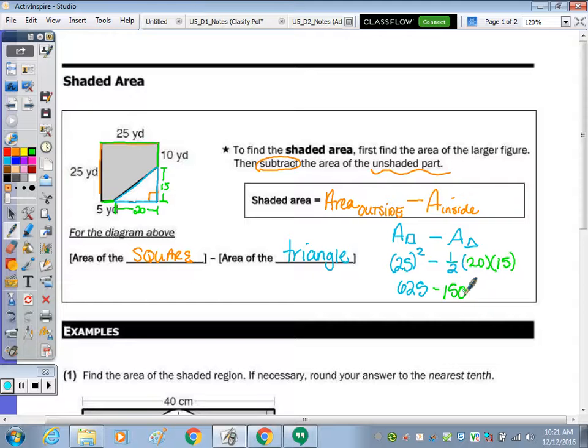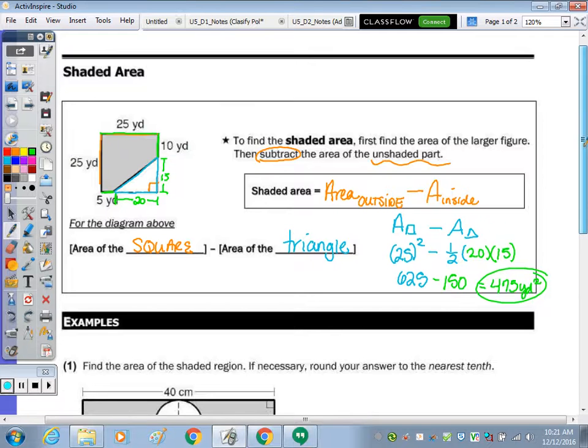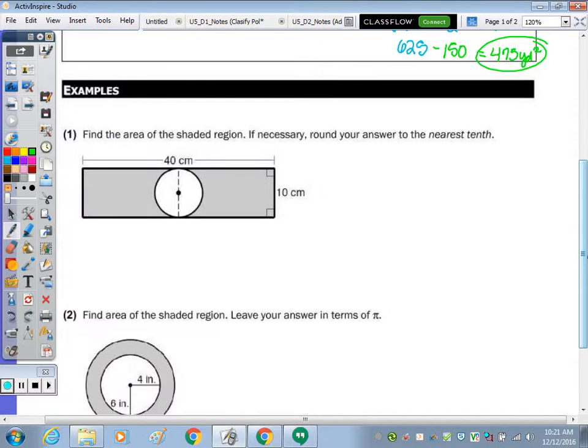So the shaded area is going to be 475 yards squared. So example number one. Find the area of the shaded region. So the shaded region is going to be the area of the rectangle minus the area of the circle.